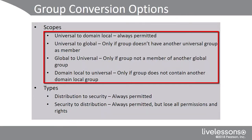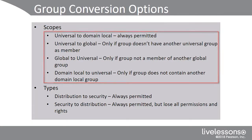A global group can be converted to a universal group if it's not a member of another global group. A domain local can be converted to universal only if the group doesn't contain another domain local group. One of the main reasons you can't convert groups is because of nesting.